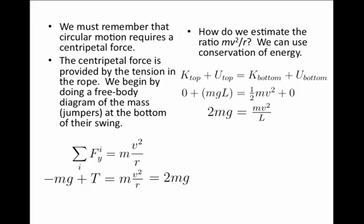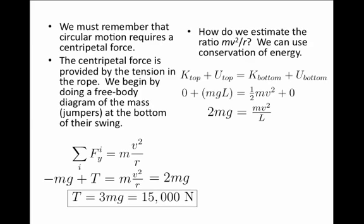Therefore, in our expression for Newton's Laws, we can substitute -mg + T equals not just mv²/R, but we'll substitute 2mg because we just discovered that relationship using conservation of energy. This allows us to solve for the tension in the rope being 3mg, which, if the jumpers weighed 5,000N, suddenly becomes 15,000N.